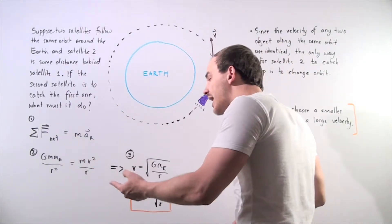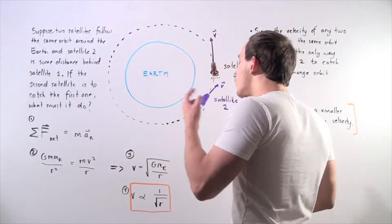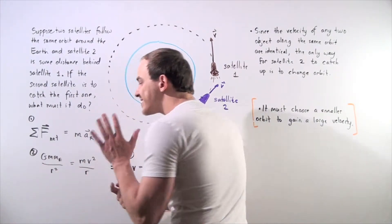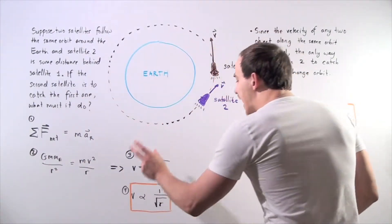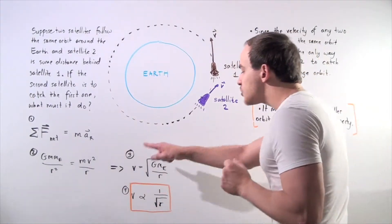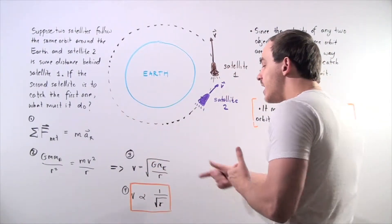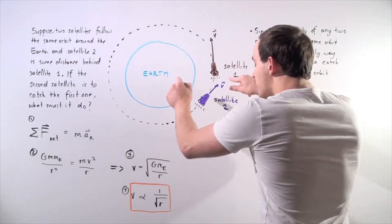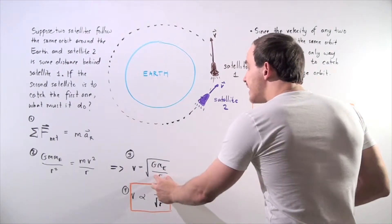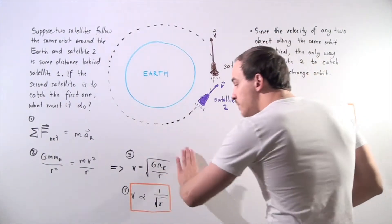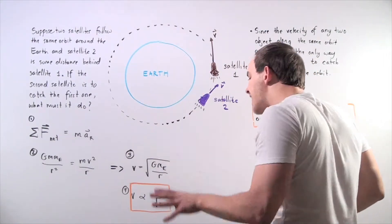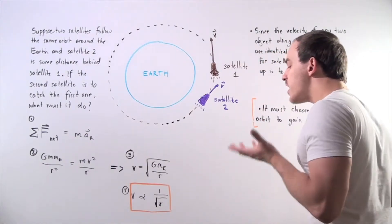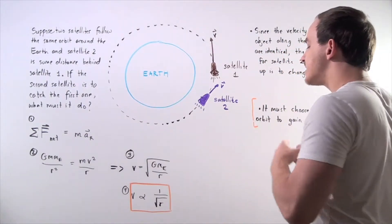The mass of the satellite multiplied by velocity squared divided by the distance. Rearranging and solving for velocity, we get that velocity equals the square root of G times M_E — the mass of the earth — divided by the radius of the orbit. So velocity is proportional to one over the square root of the orbital radius.